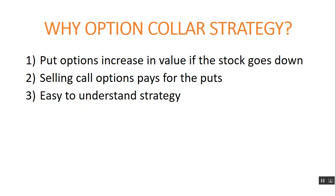Why do we go through the trouble of buying all these options, selling calls and all of this? The answer is: number one, put options increase in value if the stock goes down, so that protects your money — you lose only a fraction of the money you would lose without put options. Number two, when you sell call options, you are compensated for that transaction and get money instantly credited to your account, and that offsets the price of the put option. And finally, it's a very easy-to-understand strategy.